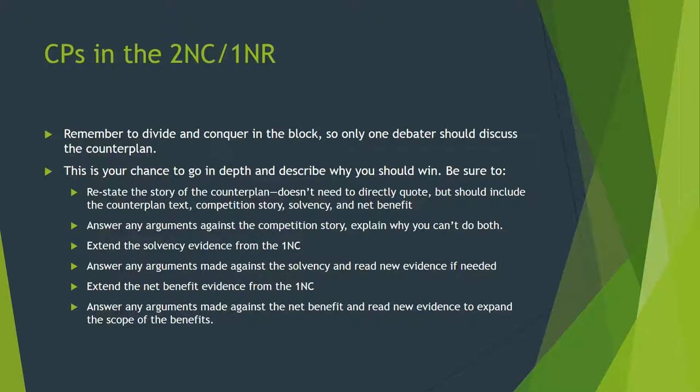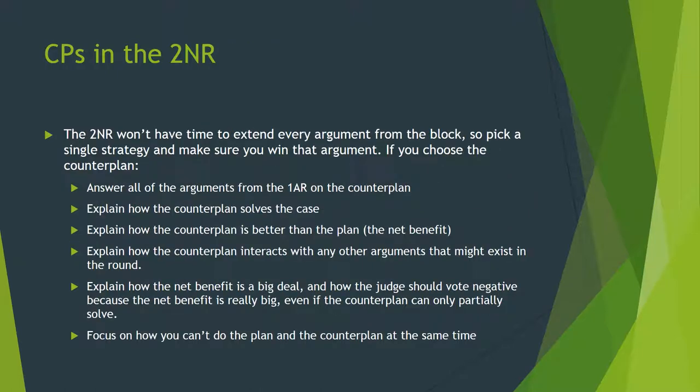Focus on why the counter plan is better than the plan, since they ultimately do the same thing. In the second negative rebuttal, you won't have time to extend every argument from the block, so pick and choose a single strategy to win the debate. If you go for the counter plan, first answer all the first affirmative rebuttal's arguments against you, then make sure the judge has a coherent idea of what they're voting for. Explain how the counter plan solves, how it is better than the plan, how it interacts with any other arguments in the round, and how the net benefit is a big deal. Make sure the judge knows they can vote negative because the net benefit is really important, even if the counter plan can't quite solve as well as the affirmative. Make sure to explain how you can't do the plan and the counter plan at the same time.